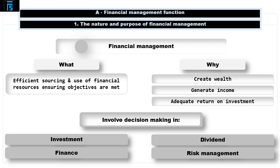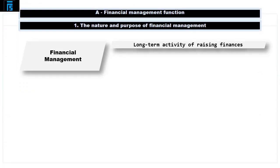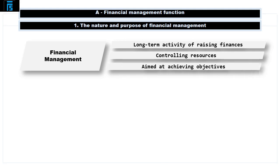Financial management is a long term activity involving a long term view of raising finances, controlling resources with the objective of achieving an organisation's goals. For example, the investment decision to build a factory is one that spans many years.